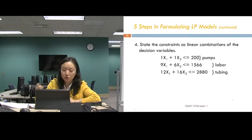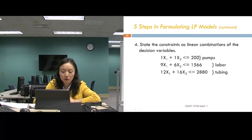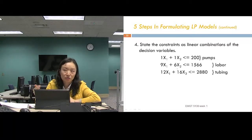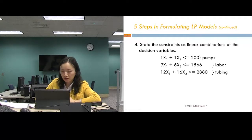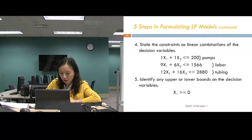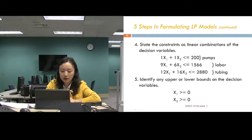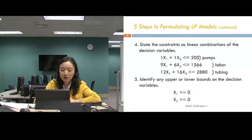We still need one more constraint: all decision variables must be greater than or equal to zero — we cannot produce a negative number. We call this the non-negativity constraint. Make sure you add non-negativity constraints for all your problems.